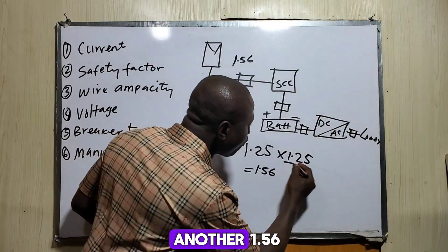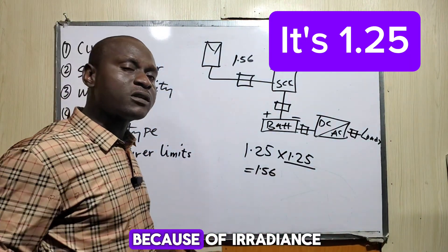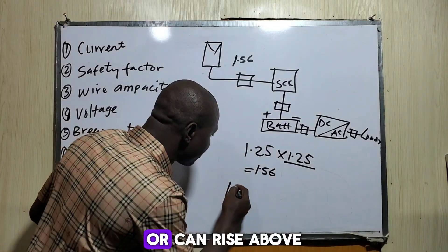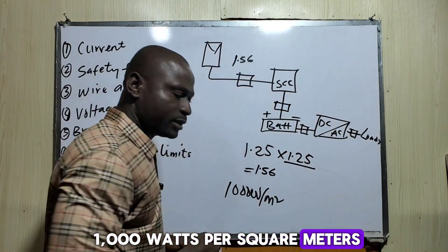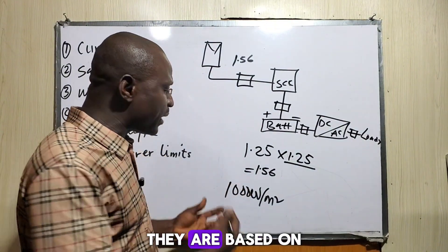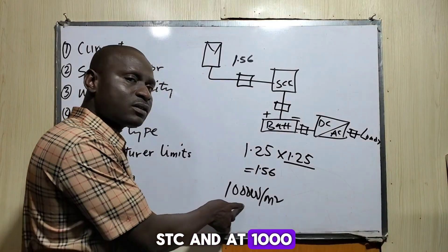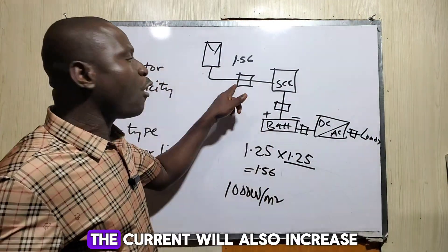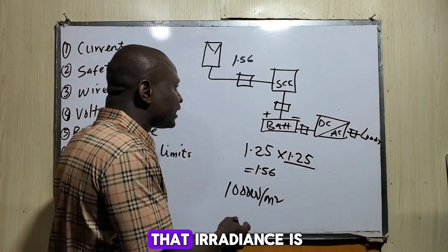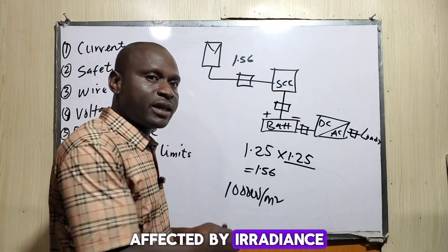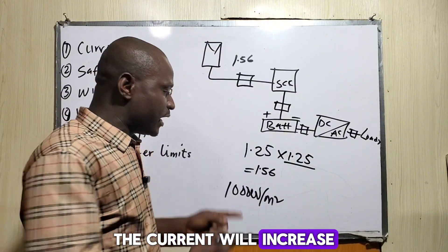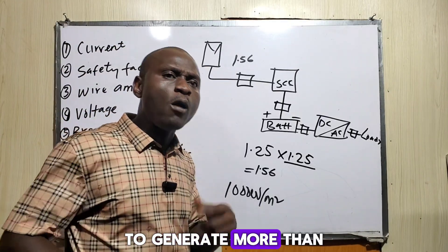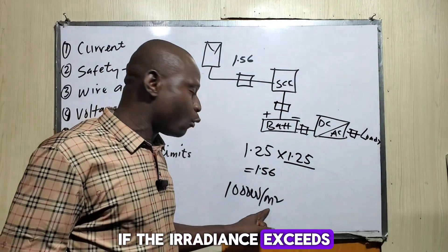We use 1.56 because of irradiance. During the day, the irradiance can rise above 1,000 watts per square meter. The solar panel data is based on standard test conditions (STC) at 1,000 W/m². If the irradiance increases above 1,000 watts per square meter, the current will also increase. Solar panels have the tendency to generate more than their rated capacity if the irradiance exceeds 1,000 watts.